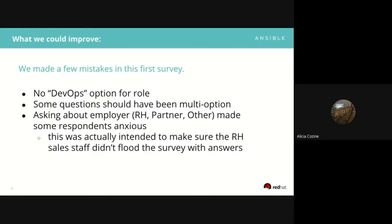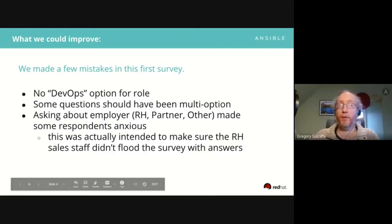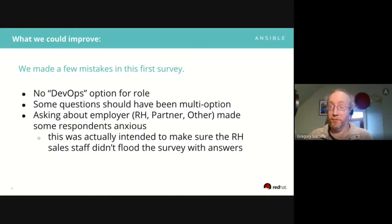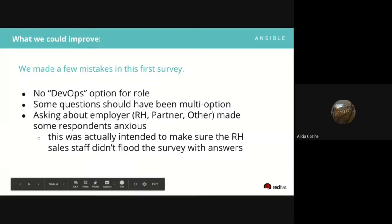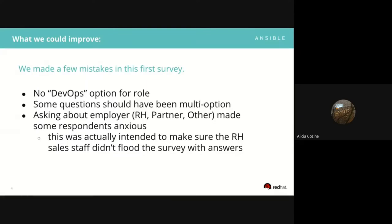Greg Sutcliffe: The question did what it was meant to do. We could tell that Red Hatters were not flooding the survey, not even slightly. So it worked — we just need to word it better. We got about 900 responses and the vast majority were community members. I do think we got real community feedback through this survey, and I don't mean to make anyone nervous about answering questions or feel we were doing anything negative.